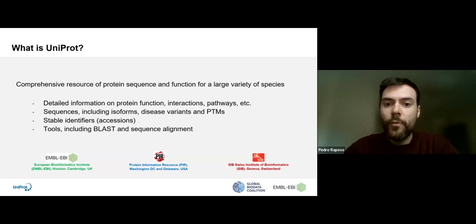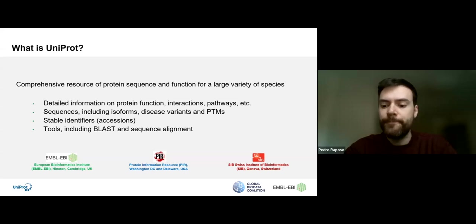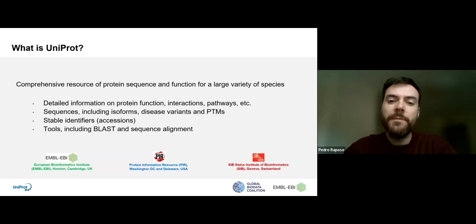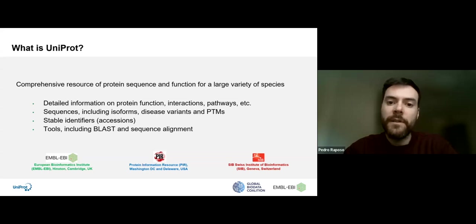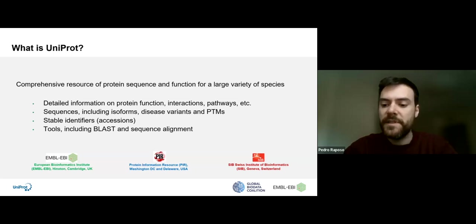Besides protein information, we have integrated tools for you to easily use for your own analysis. The UniProt consortium is composed of three different teams: EMBL-EBI from the UK, the Protein Information Resource from Washington DC in the US, and the Swiss Institute of Bioinformatics from Switzerland. Together we coordinate our efforts to provide many services from our website as well as vast knowledge on protein characterization.